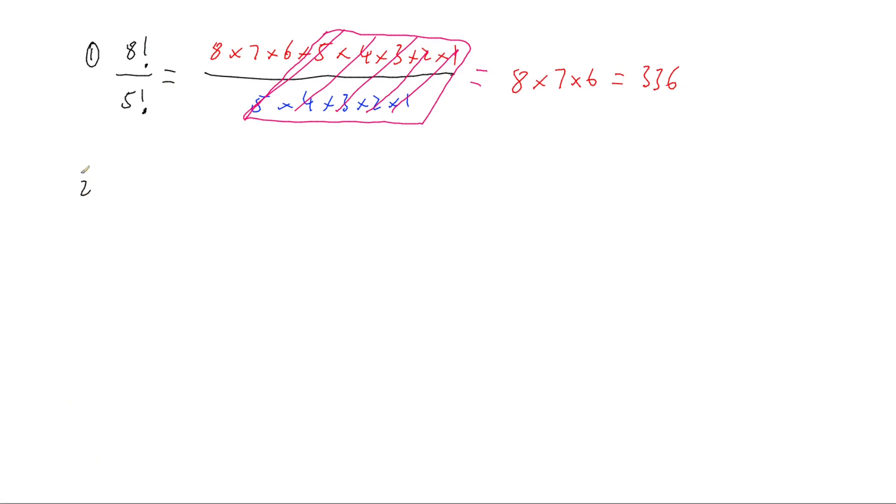So if we have a look at another question such as 6 factorial divided by 3 factorial. Well, 6 factorial is 6 times 5 times 4 times 3 times 2 times 1, and 3 factorial is 3 times 2 times 1, meaning that we're just left with 6 times 5 times 4, which we can work out to be 120.